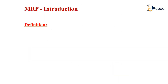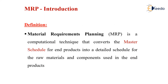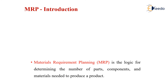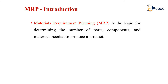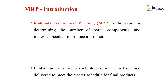What is material requirement planning? It is a computational technique that converts the master schedule for end products into a detail schedule for the raw materials and components used in the end product. Material requirement planning is the logic for determining the number of parts, components, and materials which are needed to produce a product.